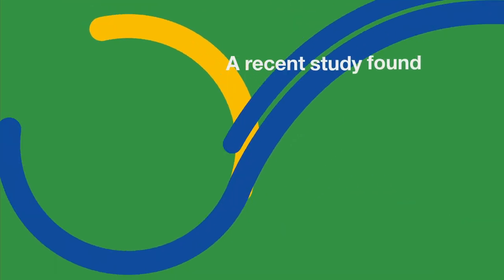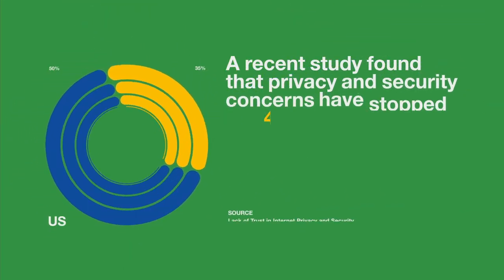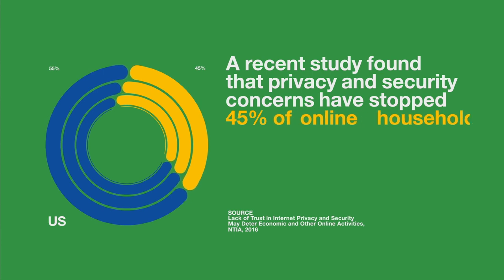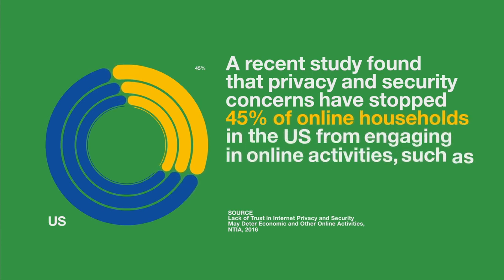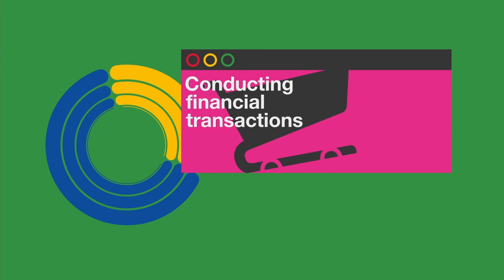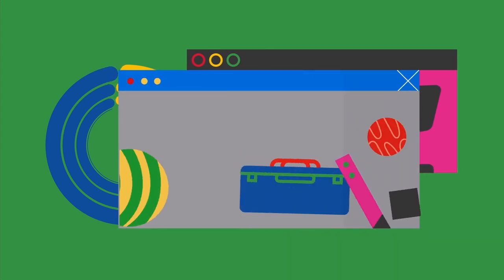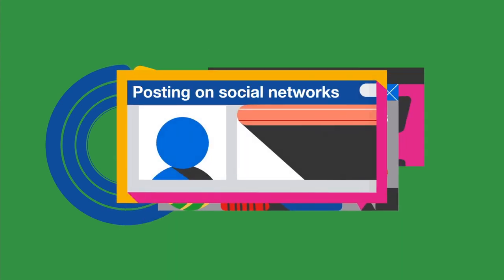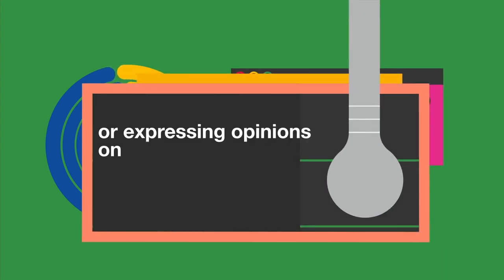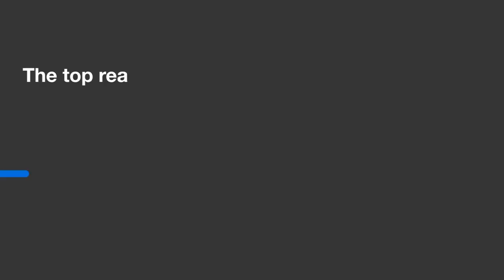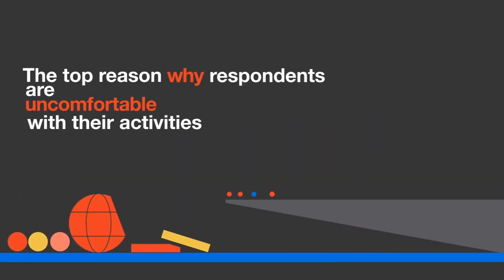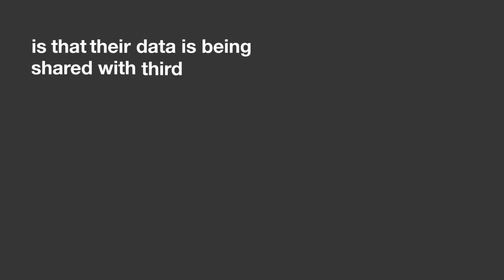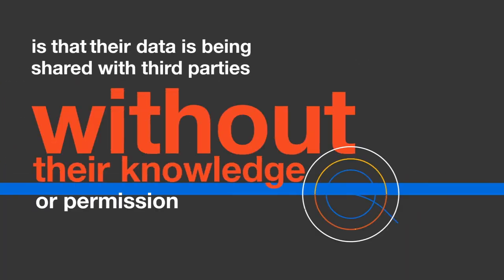A recent study found that privacy and security concerns have stopped 45% of online households in the US from engaging in online activities, such as conducting financial transactions, buying goods or services, posting on social networks or expressing opinions on controversial issues. The top reason why respondents are uncomfortable with their activities being tracked is that their data is being shared with third parties without their knowledge or permission.